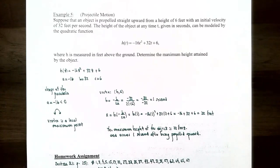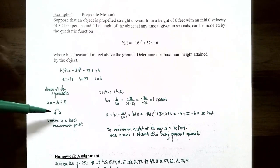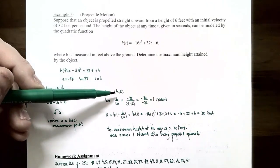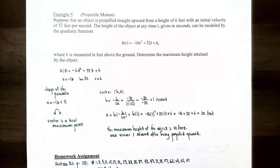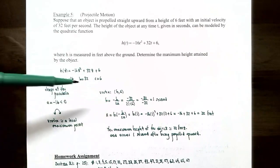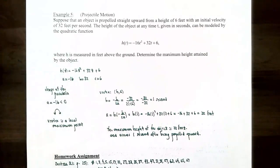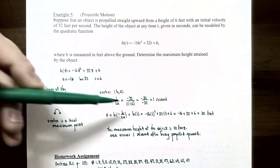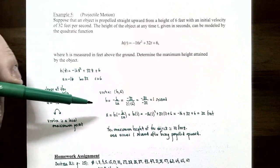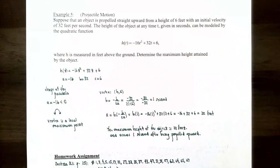Using the vertex formula, the t-coordinate of the vertex is h = -b over 2a = -32 over 2(-16) = -32 over -32 = 1. The input variable is t representing time in seconds, so the vertex occurs one second after the object was released.